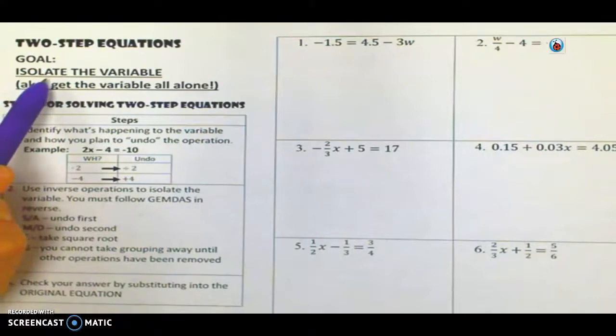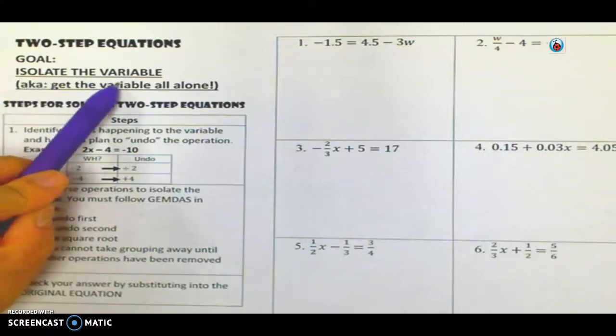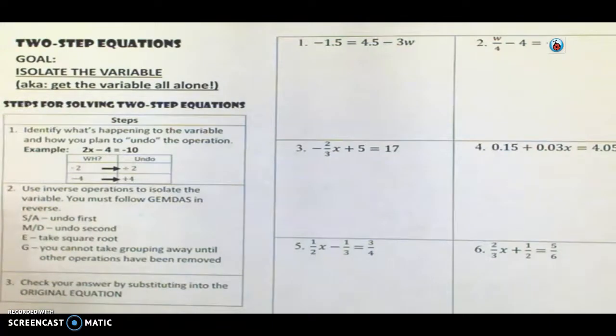So as in any equation, we want to isolate the variable, basically meaning get it all alone. So we need to think about undoing the order of operations using the inverse operation. So what's happening currently to the variable? It's multiplying by two, and we're subtracting four. So that means we need to come up with a plan. Undo it by dividing by two, and undo it by adding by four. But we have to undo them in reverse order of operations. So we want to undo any adding and subtracting first, then undo the multiplying and dividing.